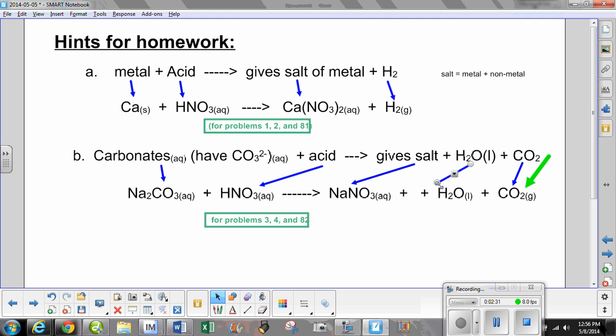And now you can see all the problems that deal with carbonates will be solved with type B. Type A reactions, which is a metal with an acid, will be solved this way. I hope you find this helpful.